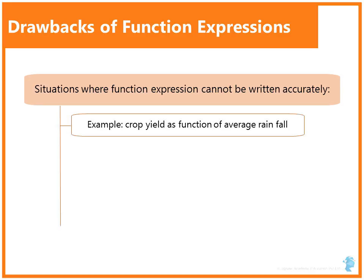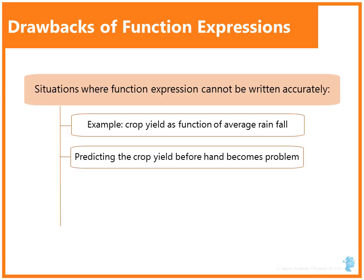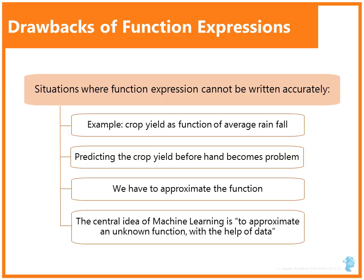Now there are some situations where we cannot write function very accurately. The example just described, crop yield as a function of average rainfall. See here, we cannot probably write an accurate expression like the one we just saw. This will be a problem if we want to predict the crop yield beforehand. Then we will somehow have to approximate the function. And this is where the central idea of machine learning comes. To approximate an unknown function with the help of the data.